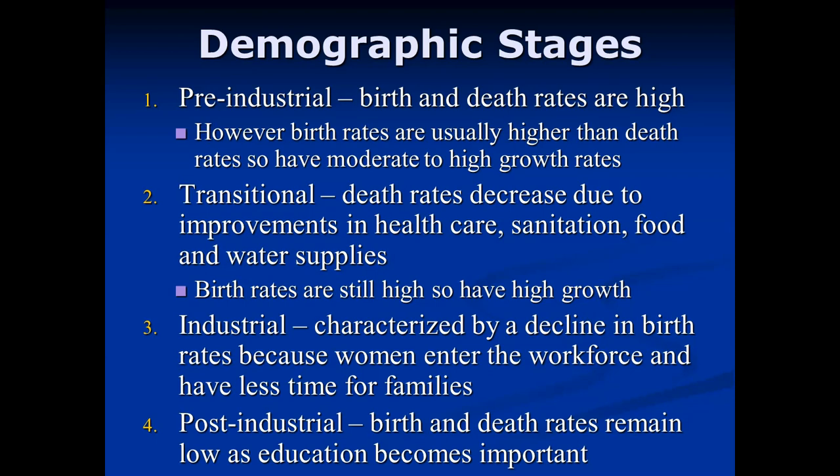Pre-industrial countries have yet to enter their industrial revolution — often the poorer countries, like Ethiopia, Egypt, Congo, Chad, and Nigeria. South Africa is an exception. In pre-industrial countries, both birth rates and death rates are high, but birth rates are usually higher, resulting in moderate to high growth rates. Looking at global data, Africa's pre-industrial countries show the highest birth rates and fastest-growing population densities.